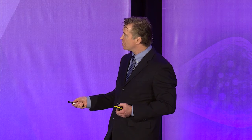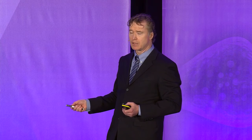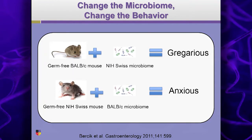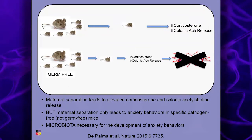Now, before any of you who would describe yourselves as a bit neurotic start thinking about asking your Zen friends for their poop — I want you to know this is experimental. Don't be doing this at home. Your nice Zen Swiss mouse, probably wearing a nice expensive watch — if you give them feces from the anxious mouse, it becomes anxious. You've transferred the phenotype, just by transferring feces.